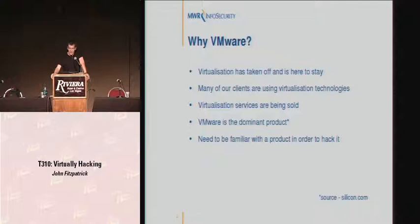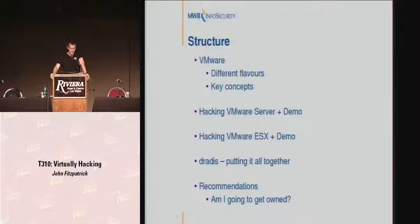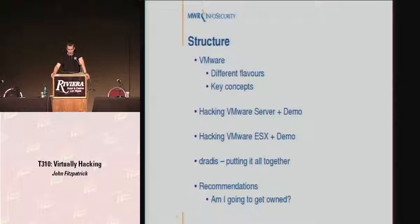I guess probably a lot of you have played about with VMware before, some maybe with virtualized networks in your office. The structure of the presentation: we're going to start by looking at VMware, the different flavors, and some key concepts. We'll move on to VMware Server and look at some ways of attacking that — I've got about six demos in total. Some of these demos are for ESX, and we'll look at different attack vectors for that. We'll also look at a tool called Dradis, which is good for information sharing during a pen test, and then move on to recommendations.